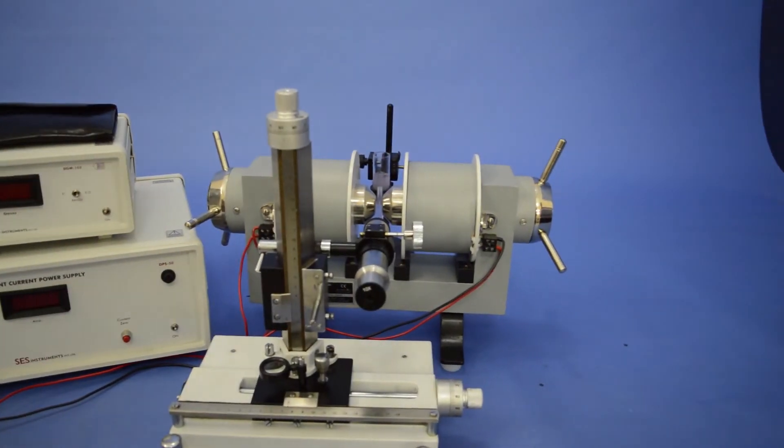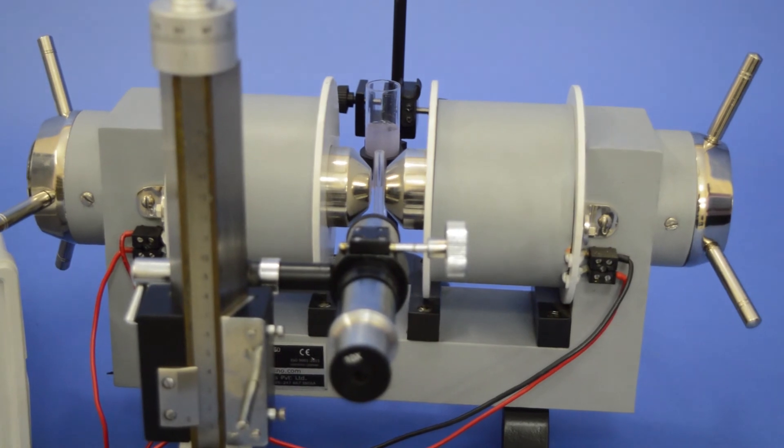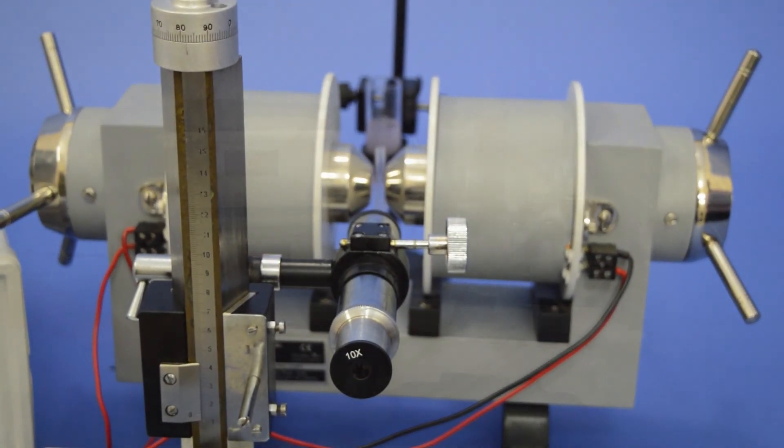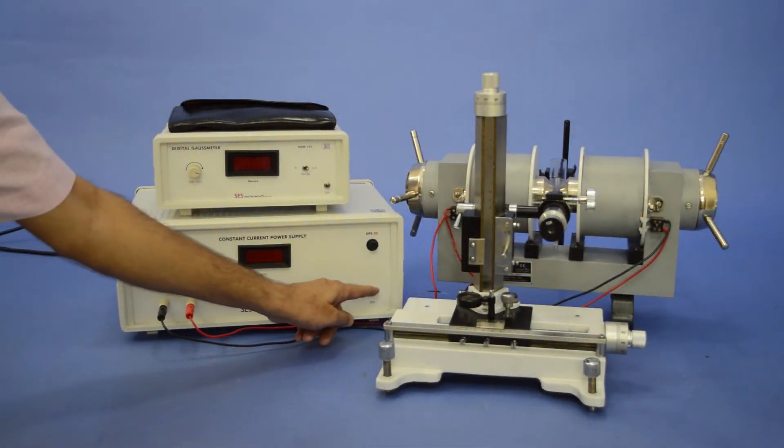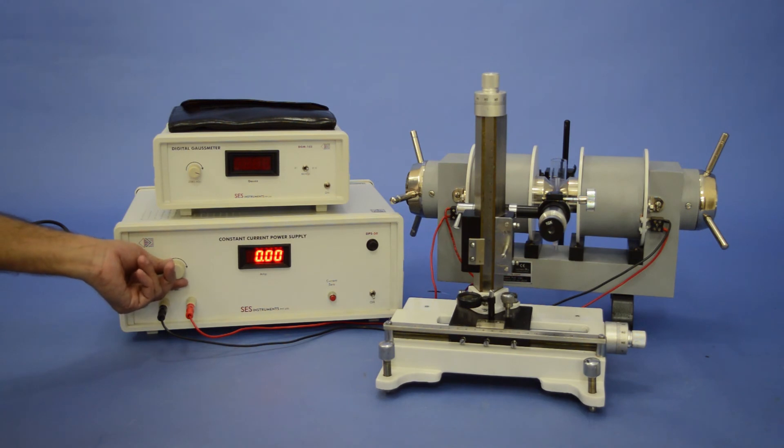Focus the microscope at the initial level of solution and take reading at zero, that is before switching DPS 50 on. Now, switch on the DPS 50 current power supply and measure the displacement small h as a function of magnetic field capital H by varying the magnet current in small steps.